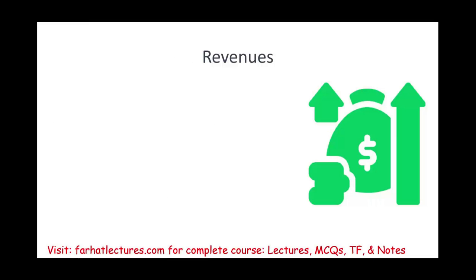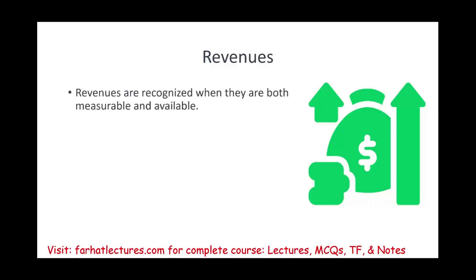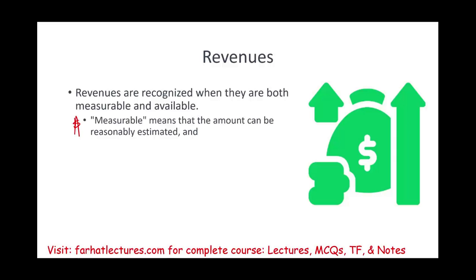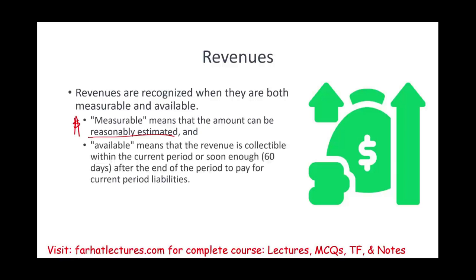Returning to revenues: we recognize revenues when both conditions are met — measurable and available. Measurable means you can put a dollar amount on it; for government, it means the amount can be reasonably estimated. Available means the revenue is collected within the current period — if you are getting the money within the current period, that's available. Or it can be collected soon enough after the end of the period.